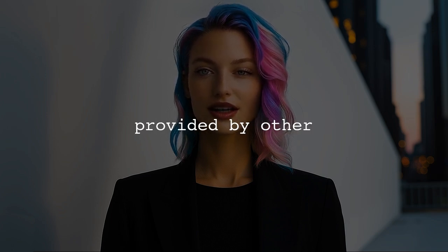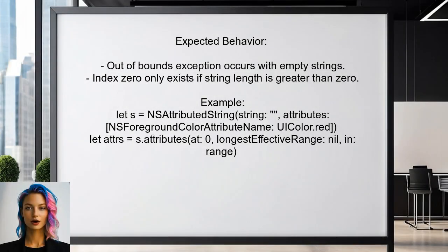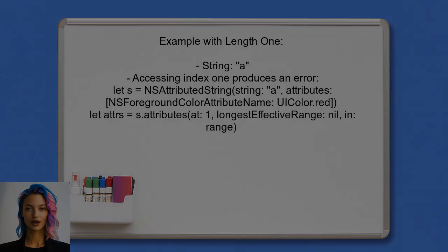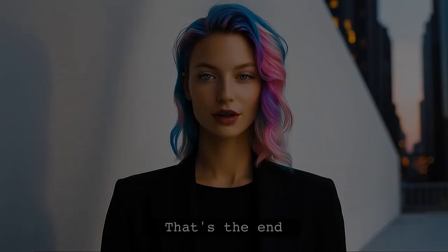Now let's look at the answers provided by other users. This user explains that the out-of-bounds exception is expected behavior. When the string length is 0, there is no character at index 0, leading to the exception when trying to access it. To illustrate this, they provide an example with a string of length 1 — accessing index 1 also results in an out-of-bounds error, confirming the indexing rule.